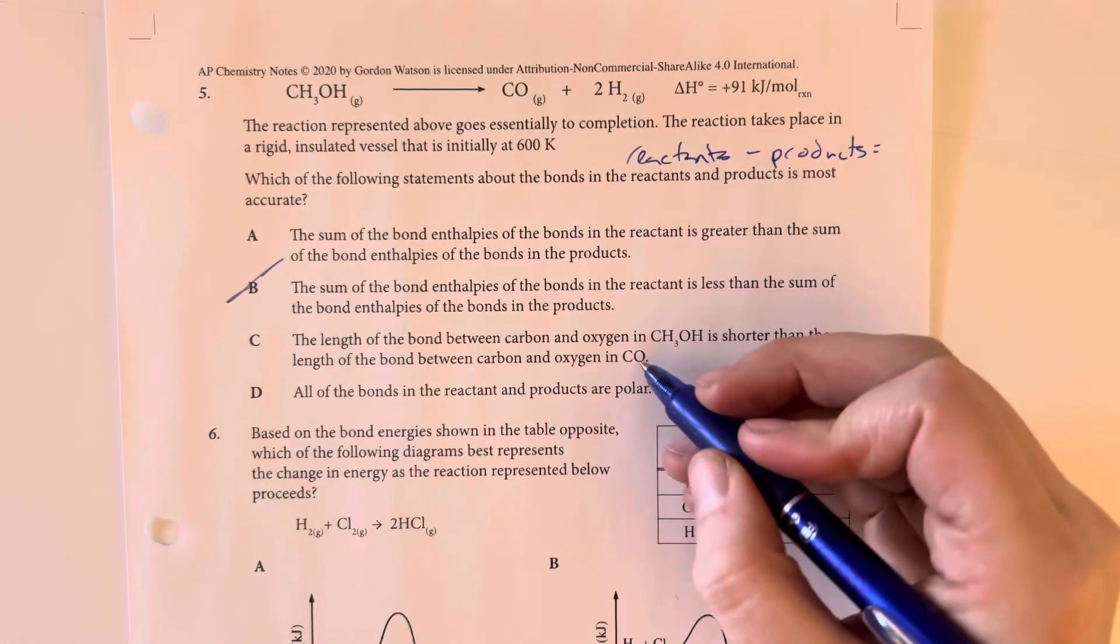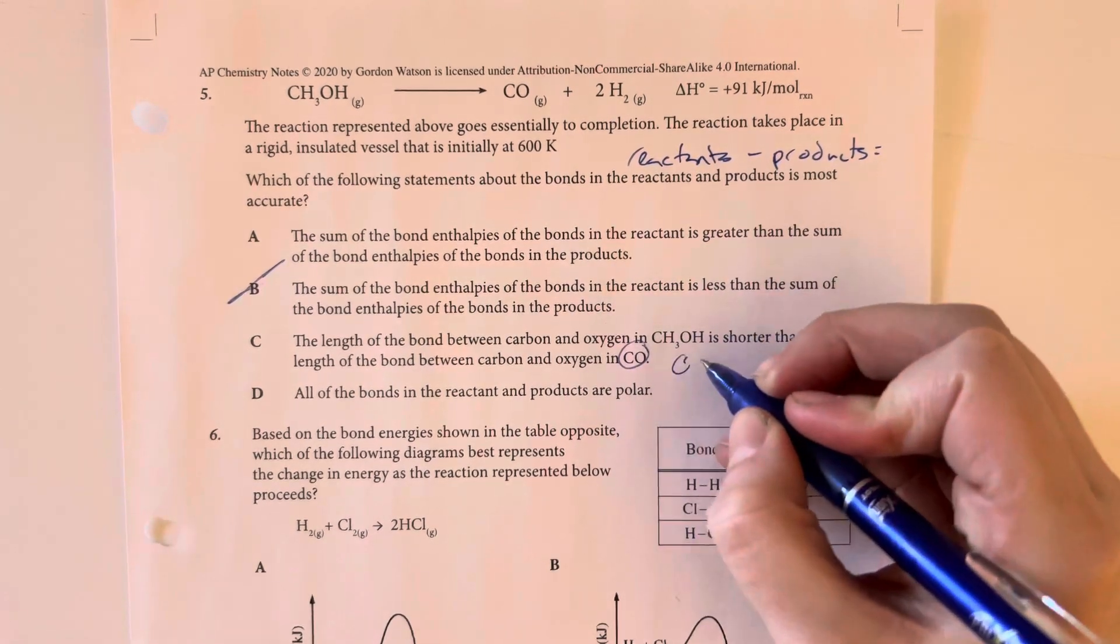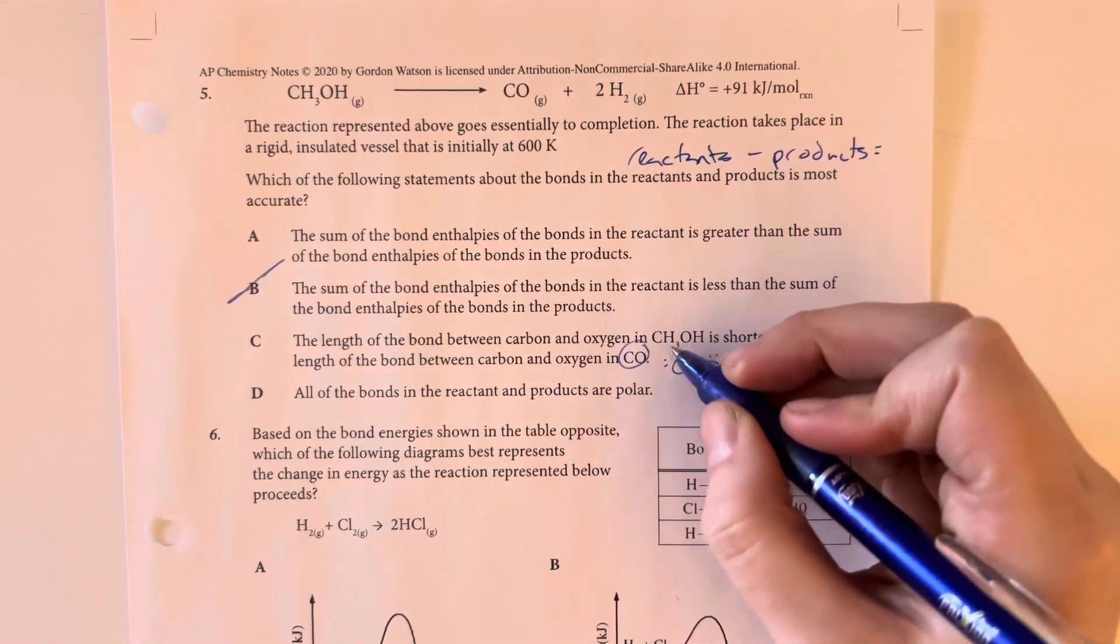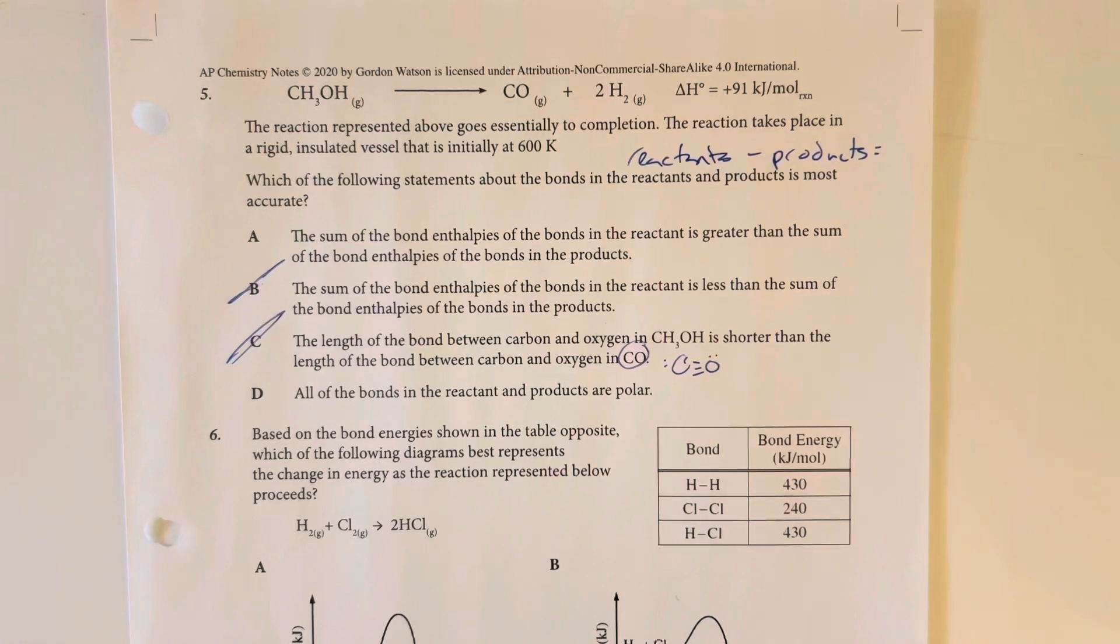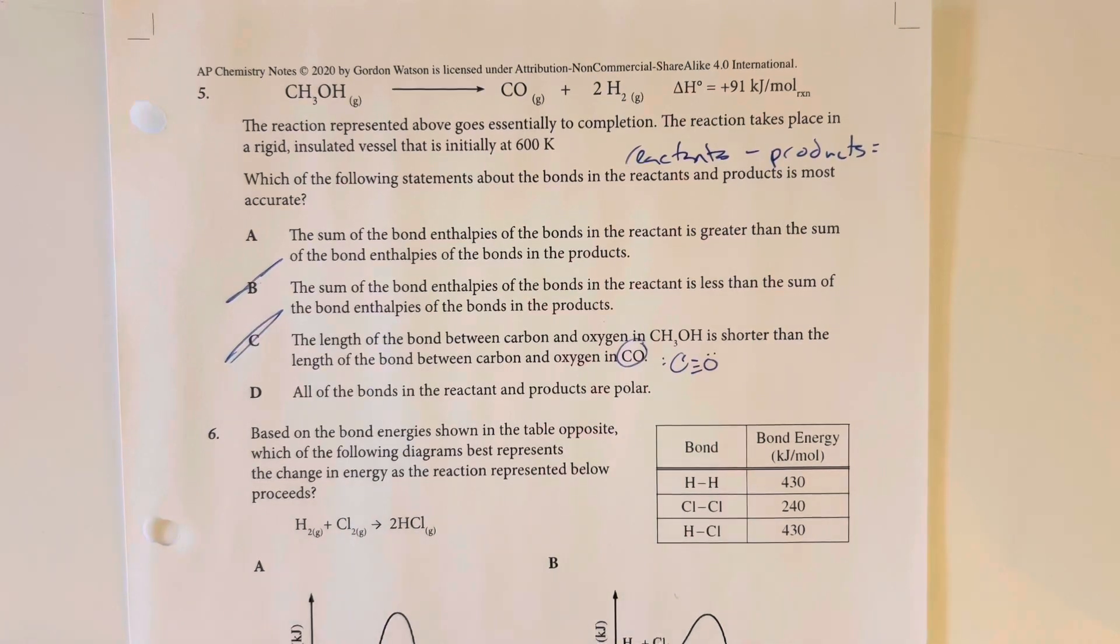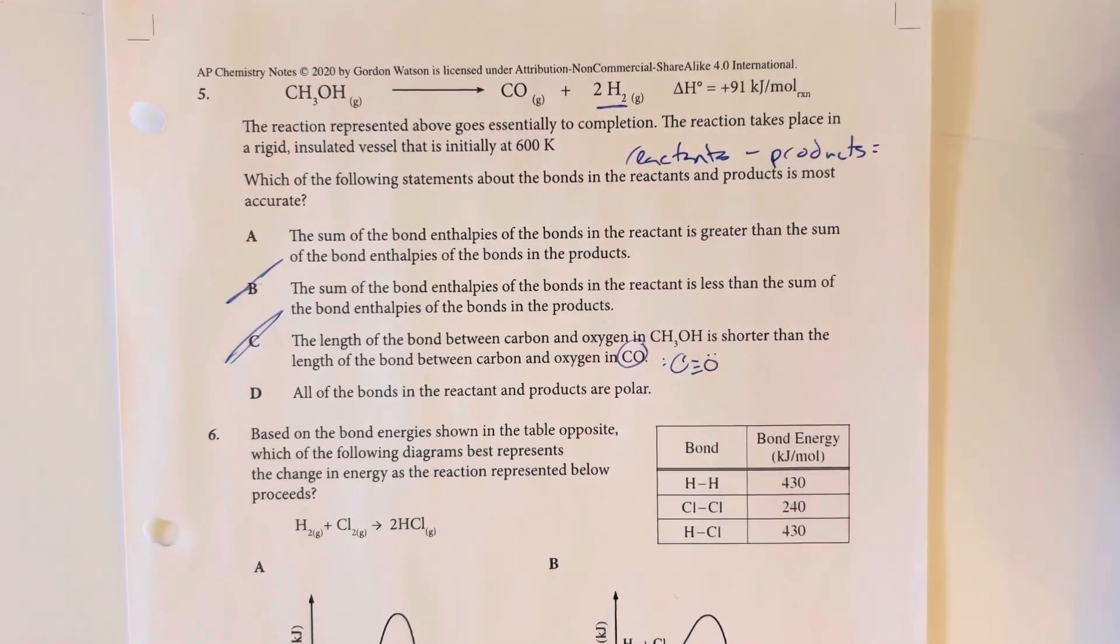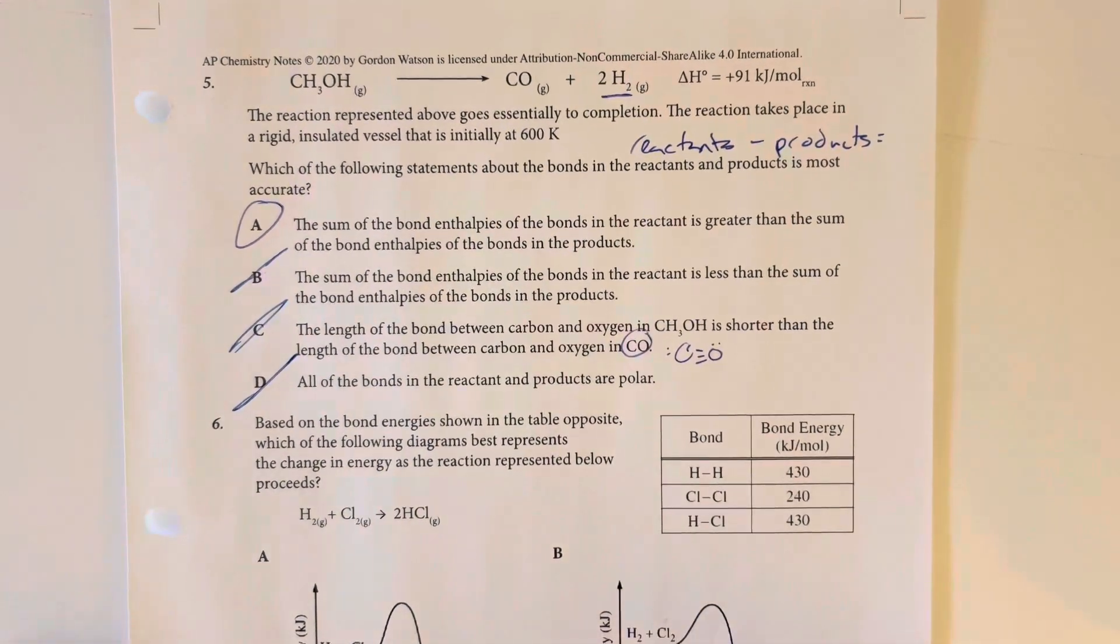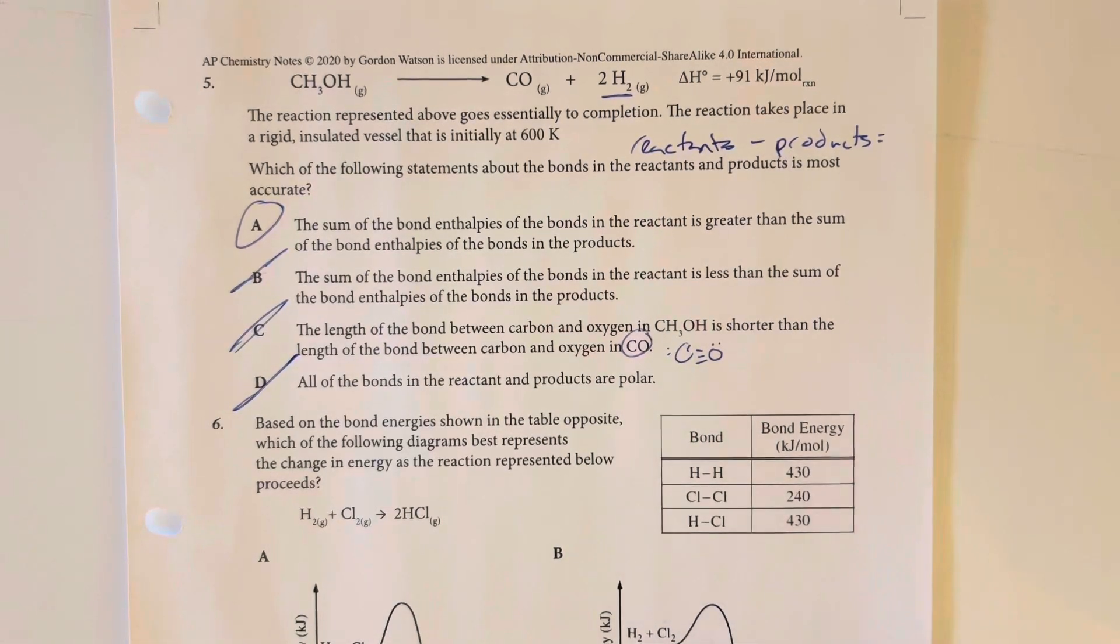Also, we know that triple bonds, which are what would be present in carbon monoxide, triple bonds are going to be my shortest bonds, whereas this would be a single bond. So that's definitely not true. We have single versus triple bond. Triple bonds are shorter bonds than single bonds. All the bonds in the reactants and products are polar. No, definitely cannot say that. I have this here where we have hydrogen bonded with itself. Anything bonded with itself is going to be a nonpolar bond. We don't have any differential between electronegativities and therefore no polarity is involved. So option choice A is my best choice.